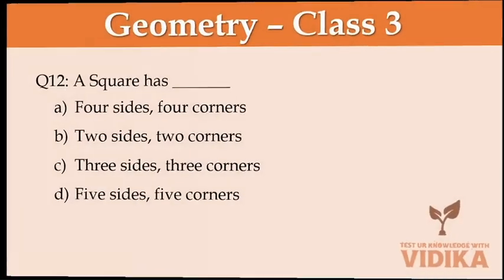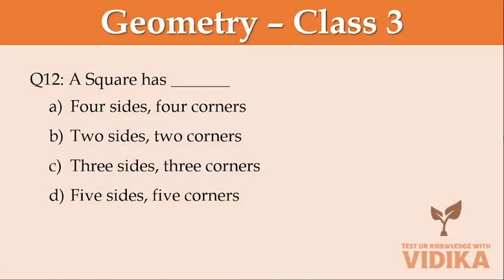A square has dash. Option A four sides, four corners. Option B two sides, two corners. Option C three sides, three corners. Option D five sides, five corners.